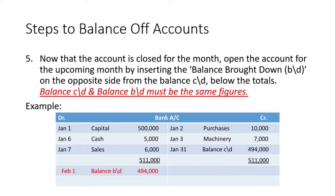Then we move to the last step. Now that the account is closed for the month, we begin a new period or new month. We now insert what is called the balance brought down, or balance b/d — it is the balance that was left on the account. The $494,000 is the balance that will start the account for the following month or period. The balance brought down must be inserted on the opposite side from the balance carried down, below the totals.